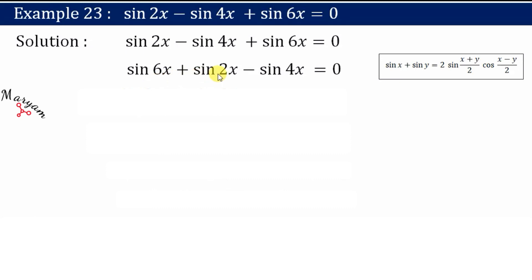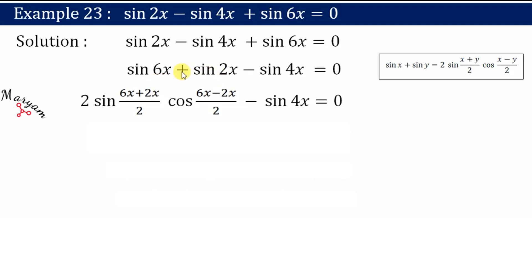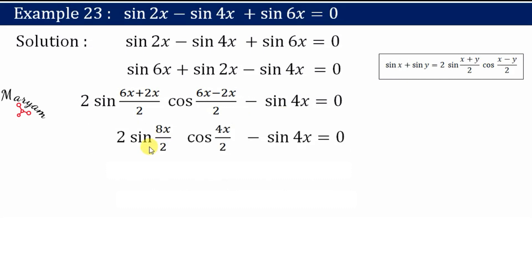When you split sin 6x + sin 2x with that formula, what you get is 2 sin((6x + 2x)/2) · cos((6x − 2x)/2) − sin 4x = 0. Adding those gives 2 sin(8x/2) · cos(4x/2) − sin 4x = 0.